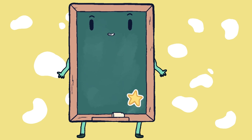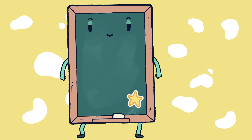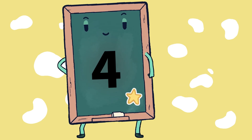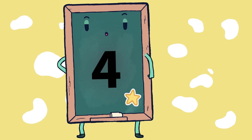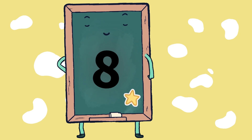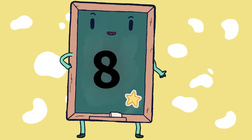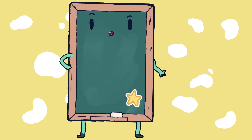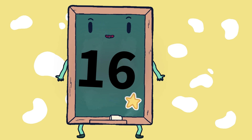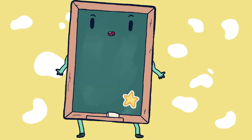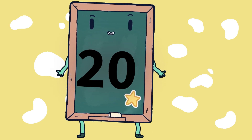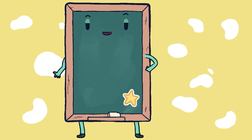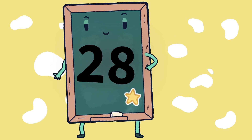So let's do it once again. 4 one ja 4, 4 2 ja 8, 4 3 ja 12, 4 4 ja 16, 4 5 ja 20, 4 6 ja 24, 4 7 ja 28.